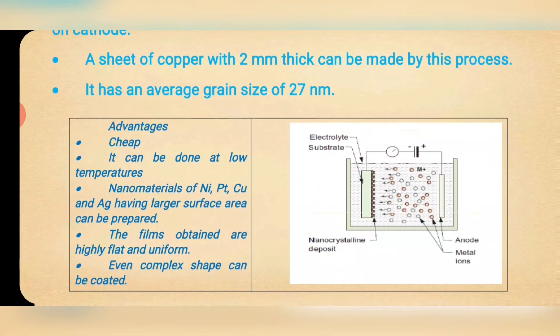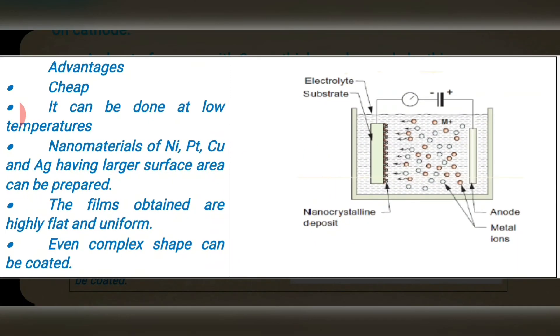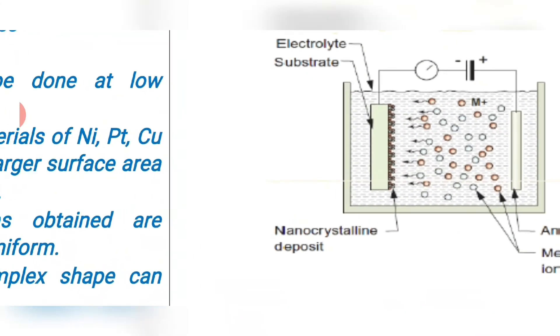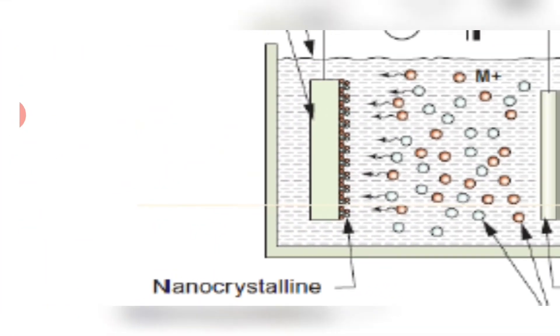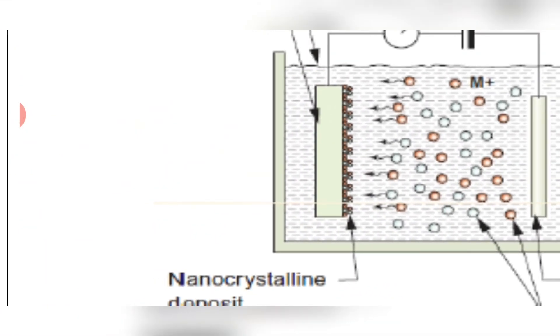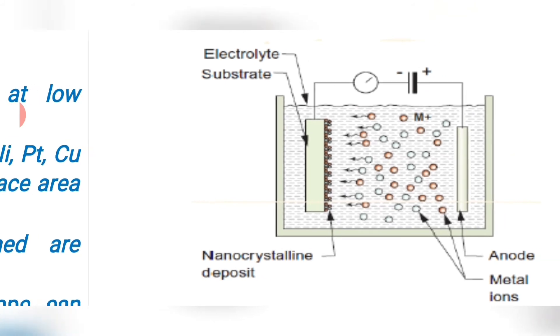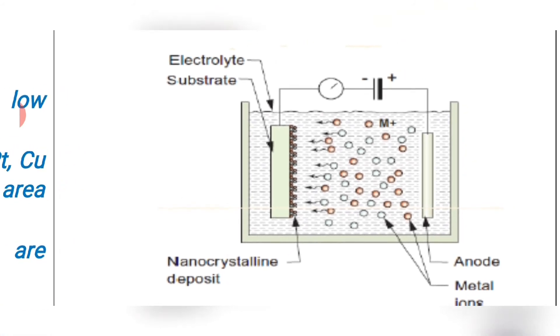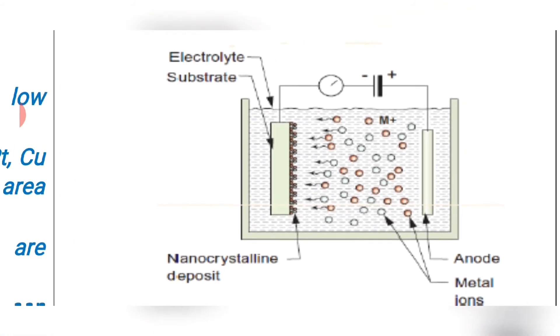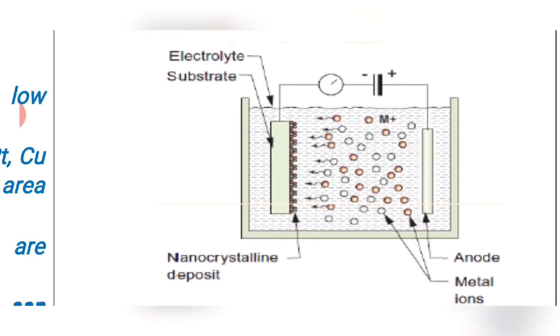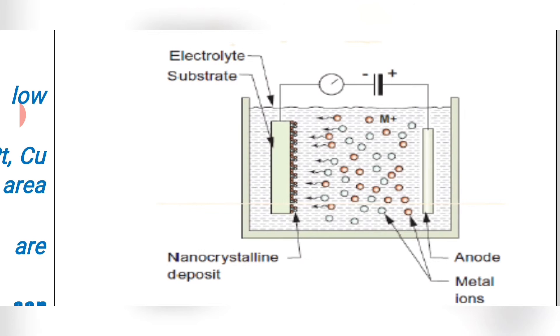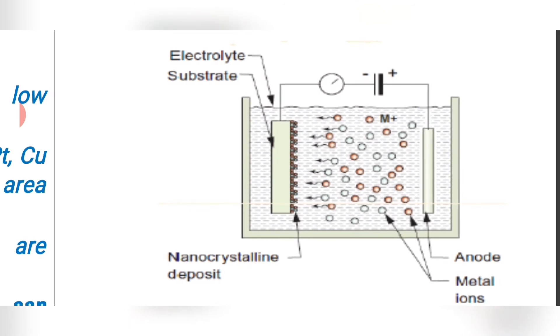To understand this process, you see this. So this is the electrochemical cell. This cell contains two electrodes, specially designed electrodes. One acts as anode, another one acts as cathode. So to synthesize copper nanomaterials, we take copper sulfate electrolyte.